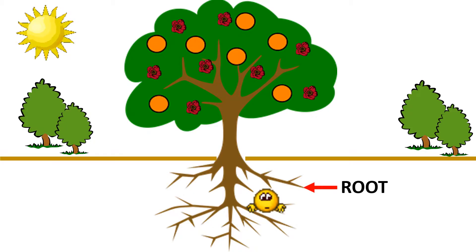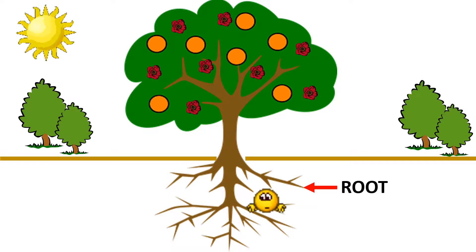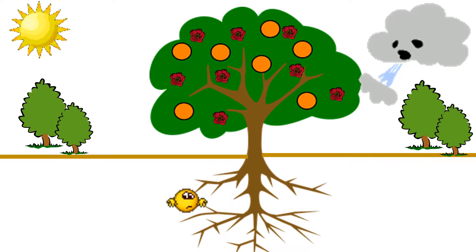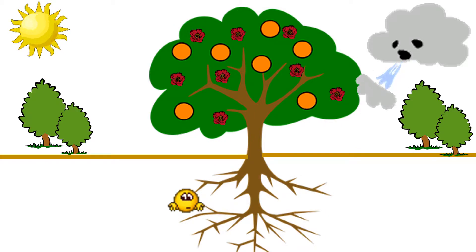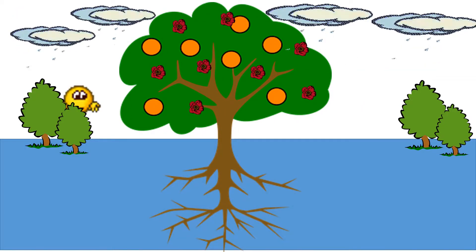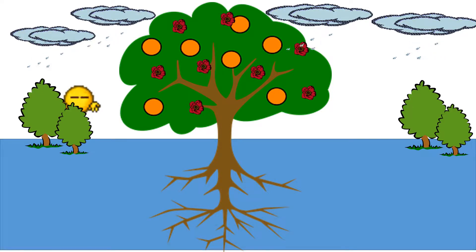Roots. This is the part we can't see — it is under the ground. A tree cannot live without roots. Roots hold the tree from falling when the wind blows, and keep the rain from washing the tree out of the ground.